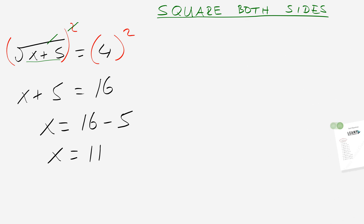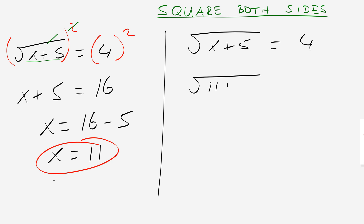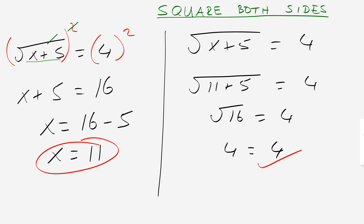Now with certain equations, we should be checking our solutions, because sometimes you can do everything correctly and get an answer that doesn't actually fit. So let's check: the square root of x plus 5 equals 4, with x equals 11. The square root of 11 plus 5 — is that equal to 4? The square root of 16 — is that equal to 4? Yes. 4 equals 4. That is correct, so x equals 11 is an allowable solution.